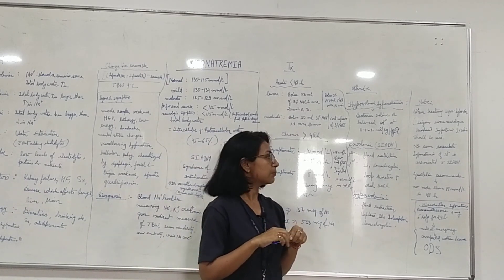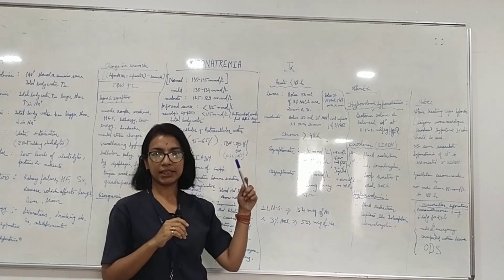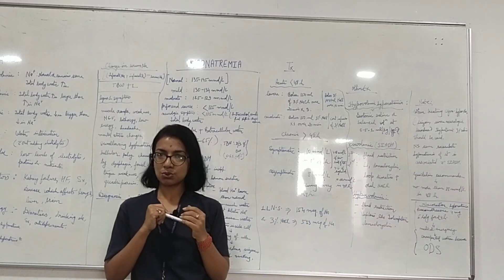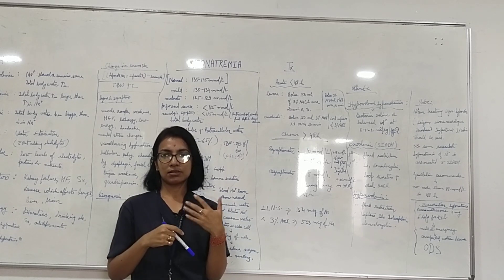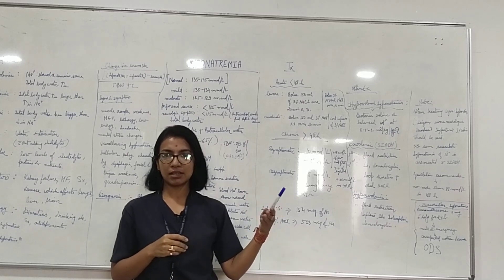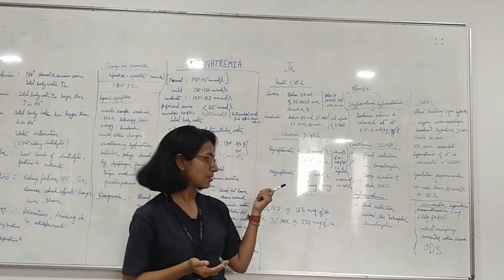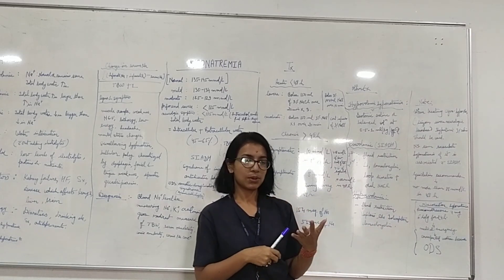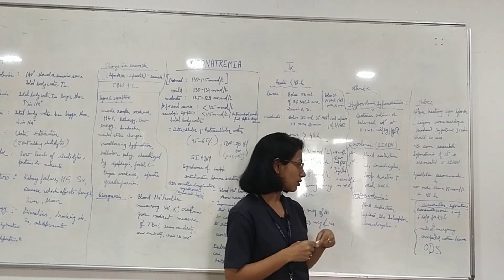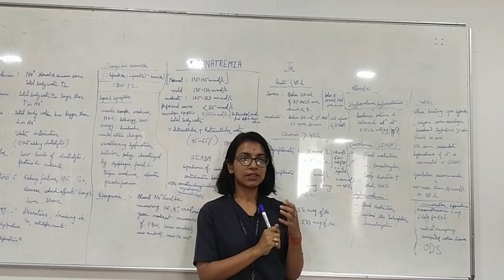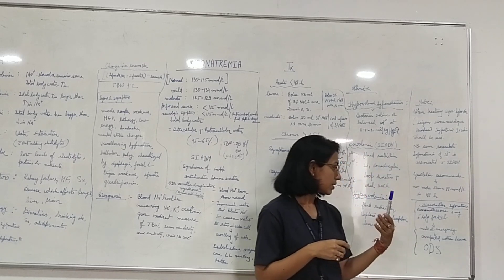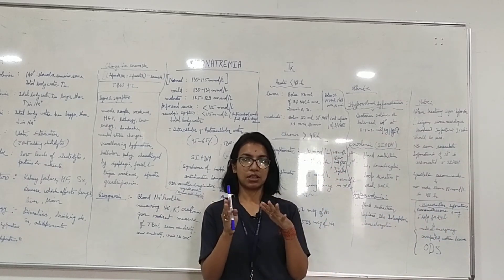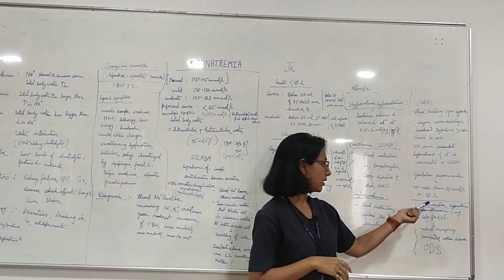Regarding ODS: when correcting sodium level, do not go more than 12 millimole per litre in a day — the maximum is 12 millimole per litre. A sudden change in electrolytes due to rapid IV fluid administration can affect brain cells. If hyponatremia is over-corrected and there is a risk of developing ODS, that is a medical emergency. If ODS is occurring along with continued diuresis, dexamethasone 4 mg every six hours for 24 hours is given.